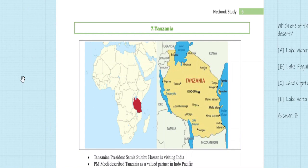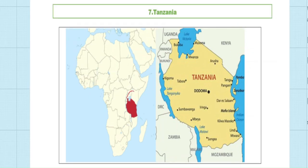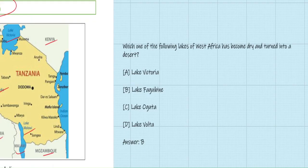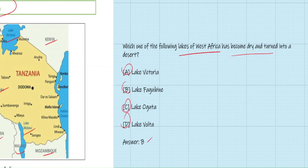The next news is about Tanzania's President visiting India. The location of Tanzania is important from a geography perspective. Tanzania's neighboring countries are: Kenya to the north, and Uganda, Rwanda, Burundi, Democratic Republic of Congo, Zambia, Malawi, and Mozambique. Three important water bodies are Lake Victoria, Lake Tanganyika, and Lake Malawi. Prime Minister Modi stated that India considers Tanzania a valued partner in the Indo-Pacific relationship. Previous year question: 'Which lake of Africa has become dry and turned into a desert?' — The answer is B.